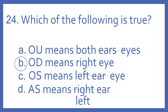And the answer is B. OD means right eye — that's the correct statement. OU means both eyes. OS means left eye. And AS means left ear.